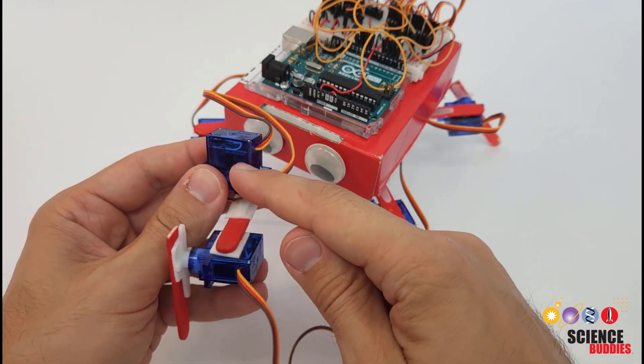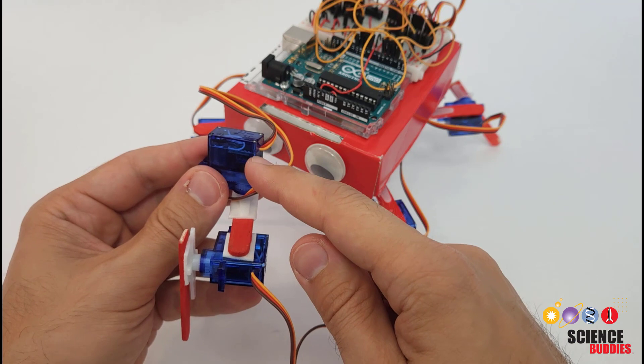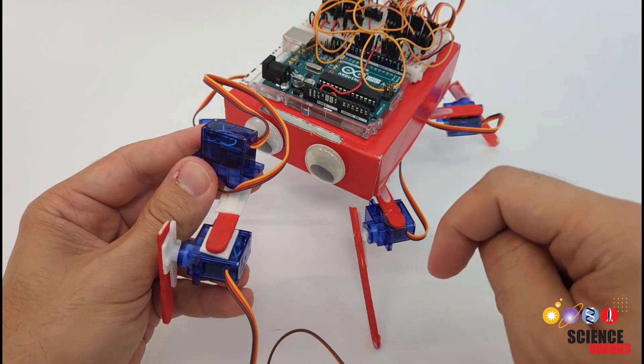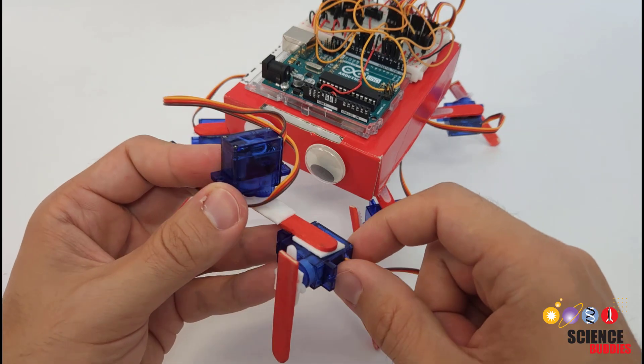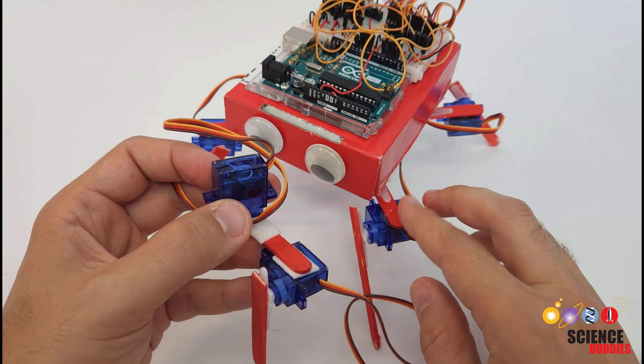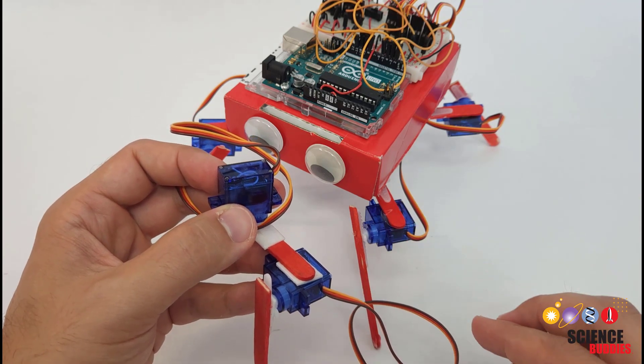Now if you don't know how to control these servo motors with an Arduino we have a separate tutorial video all about these motors that you can find linked in the description. So we're not going to cover controlling individual motors here. Instead we're going to talk about how you combine lots of these motors to make a walking robot.